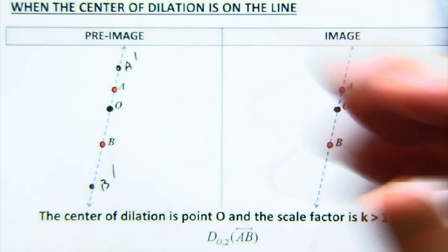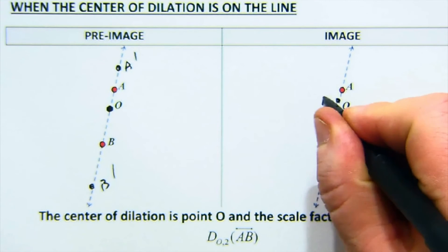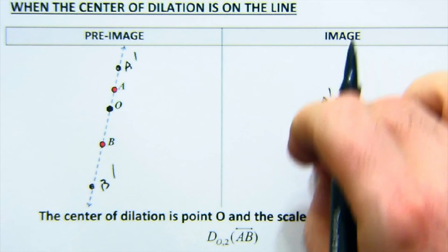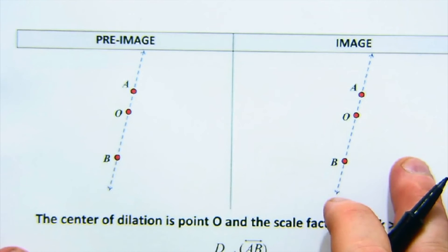But notice it just keeps the line the same line - nothing changes. Same thing if you dilate it by a half - this would be half the size and this would be half the size, but again no new lines are formed.